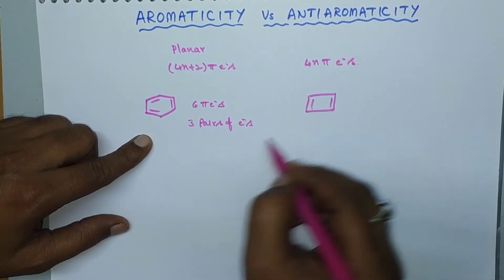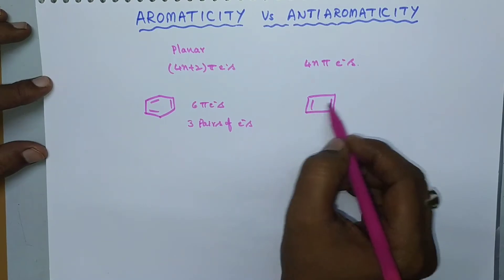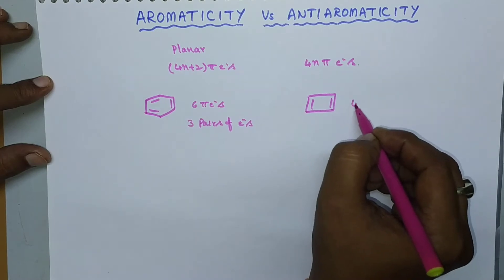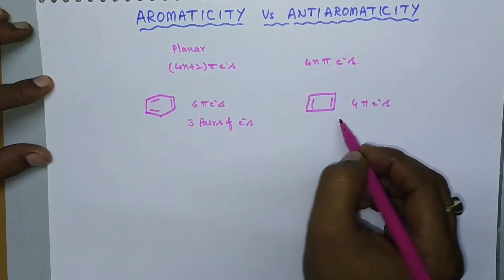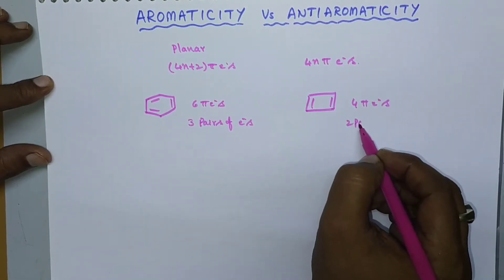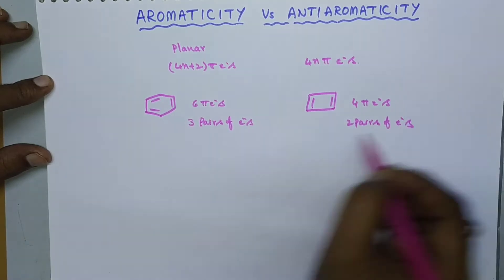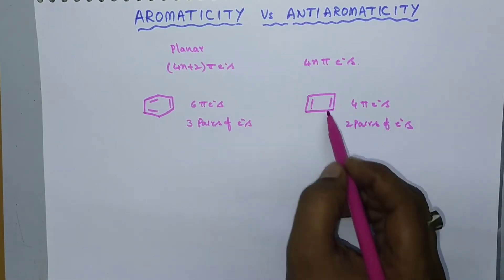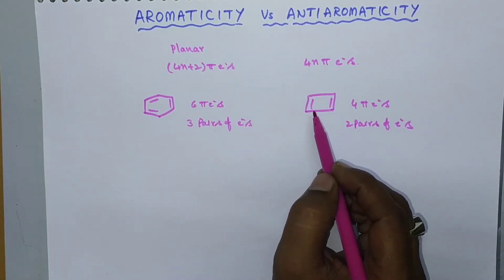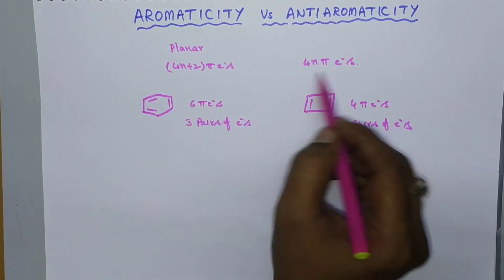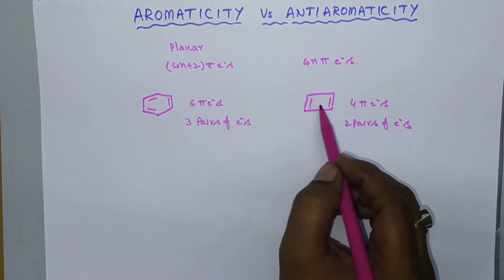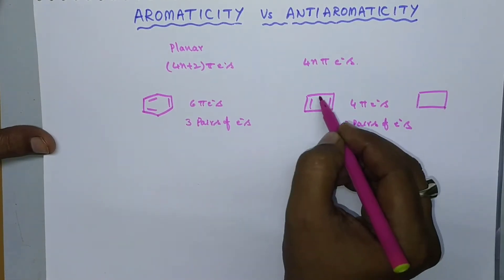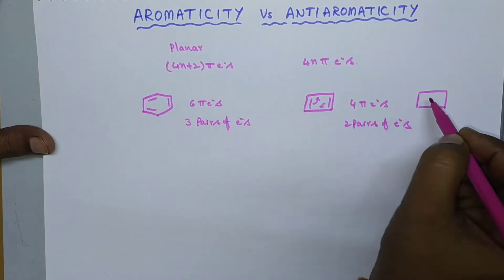Cyclobutadiene consists of 4 π electrons — that is 2 pairs of π electrons. This molecule will exhibit anti-aromaticity due to the presence of 4n π electrons. The molecule is planar and also involves in some resonance by delocalization of these π electrons.